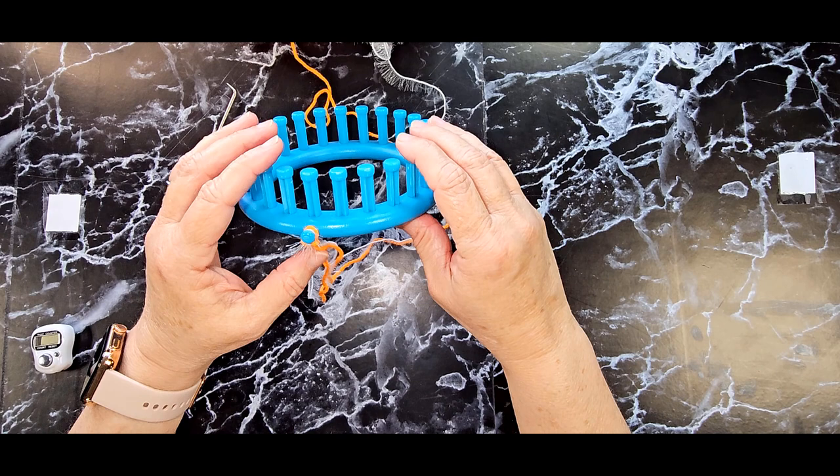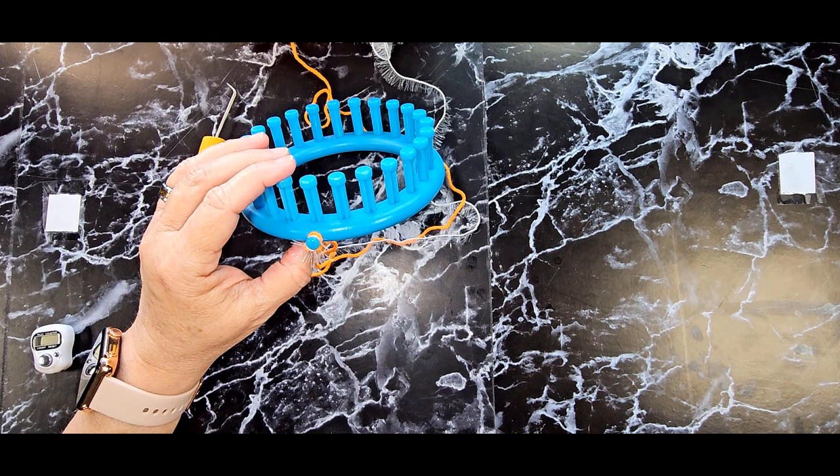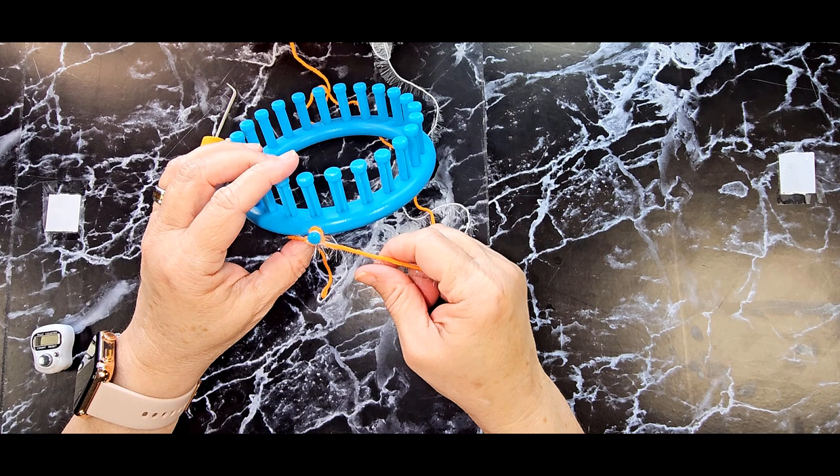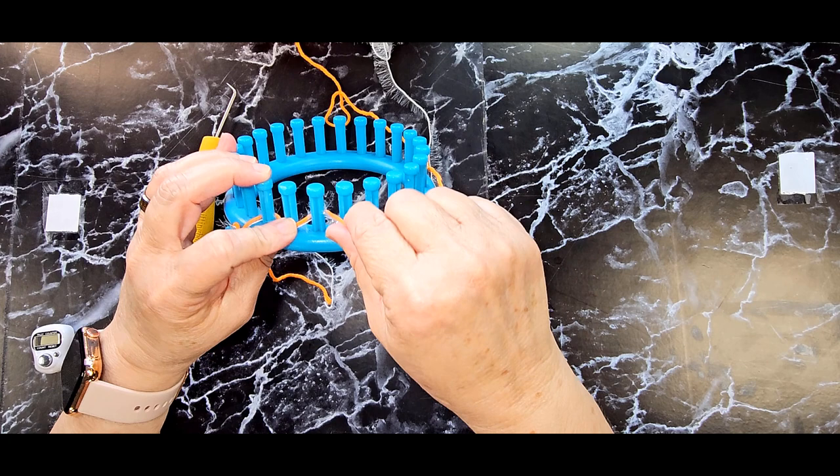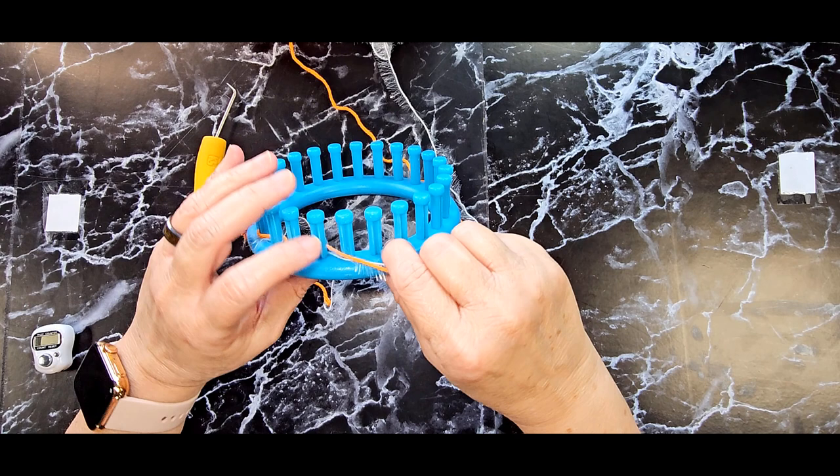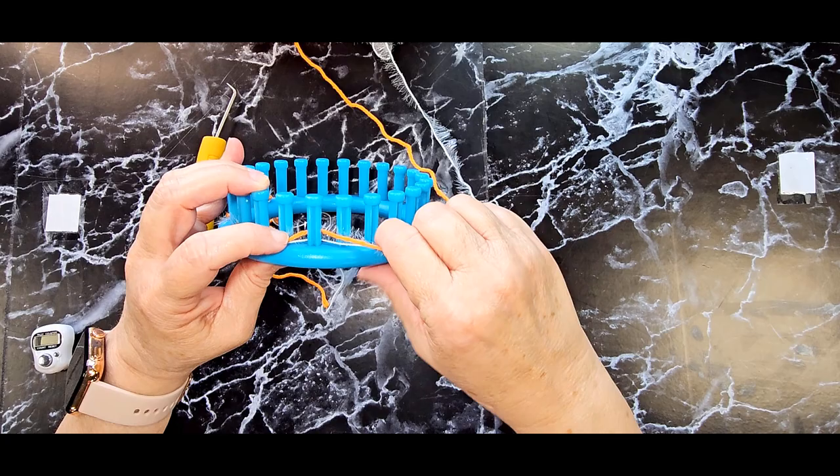To start, once you get it going, it's really quick and easy. This is the hardest part. To start, you're going to do a drawstring cast on. And to do that, you're going to take your yarn behind your first peg and then in front, behind, in front. So basically you're just zigzagging. So do that all the way around until you get back to the anchor peg. Make sure you're grabbing both strands of yarn.